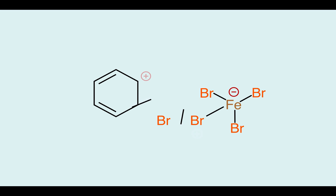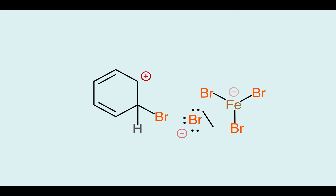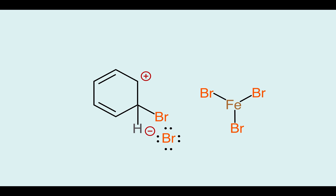One of the double bonds becomes shared in a new bond with bromine and forms a carbocation on benzene. Now one of the bromine atoms can dissociate from the iron complex, leaving as Br⁻. This deprotonates the molecule, neutralizes the carbocation, and forms bromobenzene.